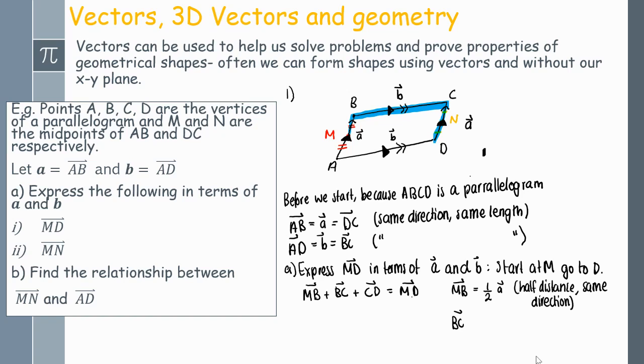Vector BC, I've already labelled that in—that is just vector little b. Notice CD is the opposite direction of DC. DC is vector a, so it can be described as negative a. Now I have MB, BC and CD all in terms of a or b. I'll have a half a plus little b and minus a. I can collect like terms and simplify, and then we'll get that MD is equal to b minus a half a. Notice you could have also gone from M to A to D and you should get the same thing.